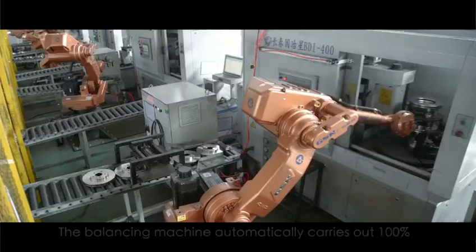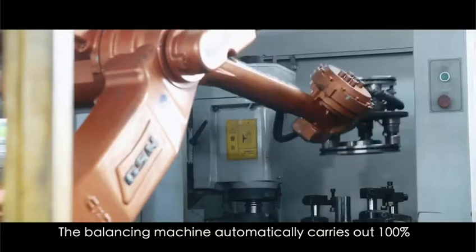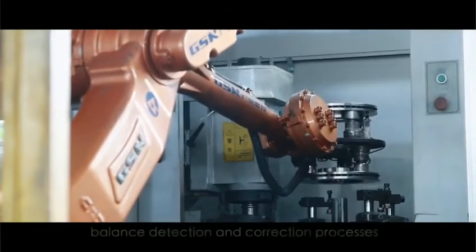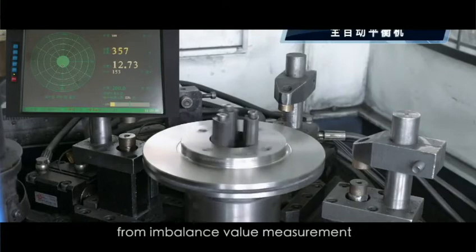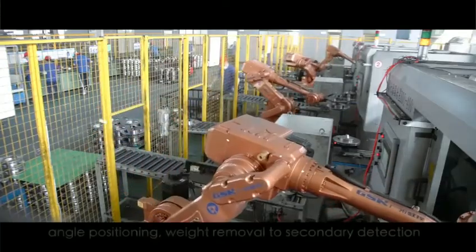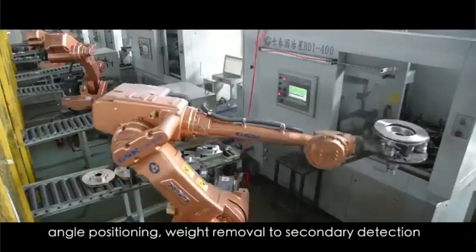The balancing machine automatically carries out 100% balance detection and correction processes from imbalance value measurement, angle positioning, weight removal, to secondary detection.